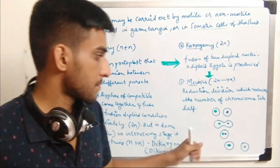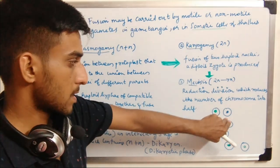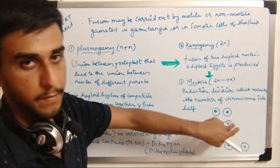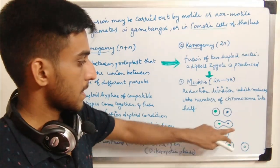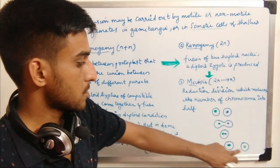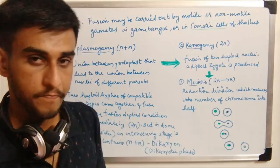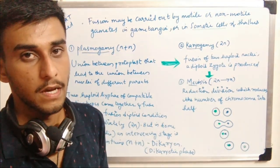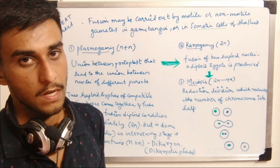Two cells with different nuclei of different parentage come together. First their protoplasm gets fused, then the nuclei fuse forming a zygote — the fusion product. This fusion product later undergoes meiosis to form haploid spores. The process of meiosis is for the production of sex gametes as well.